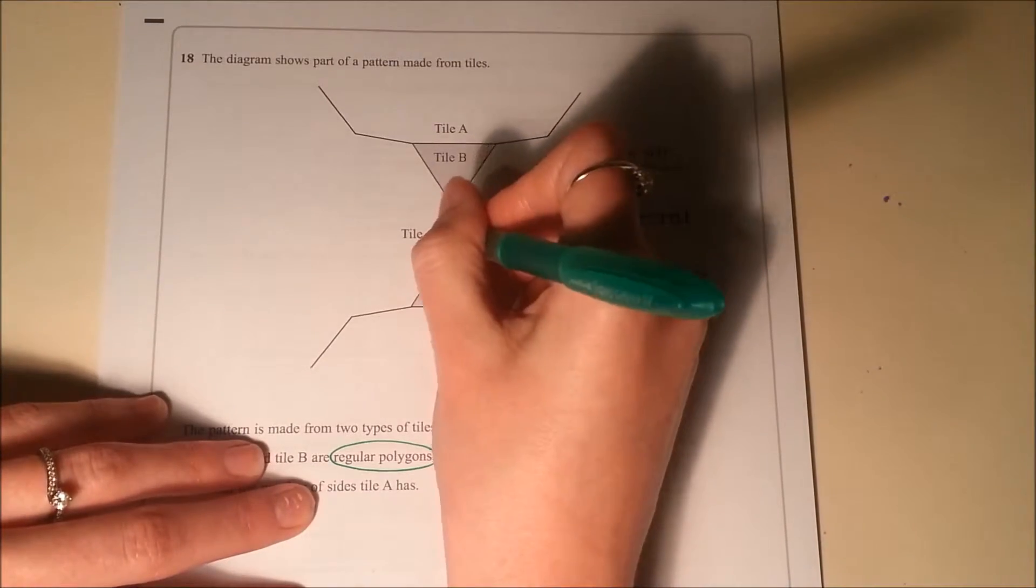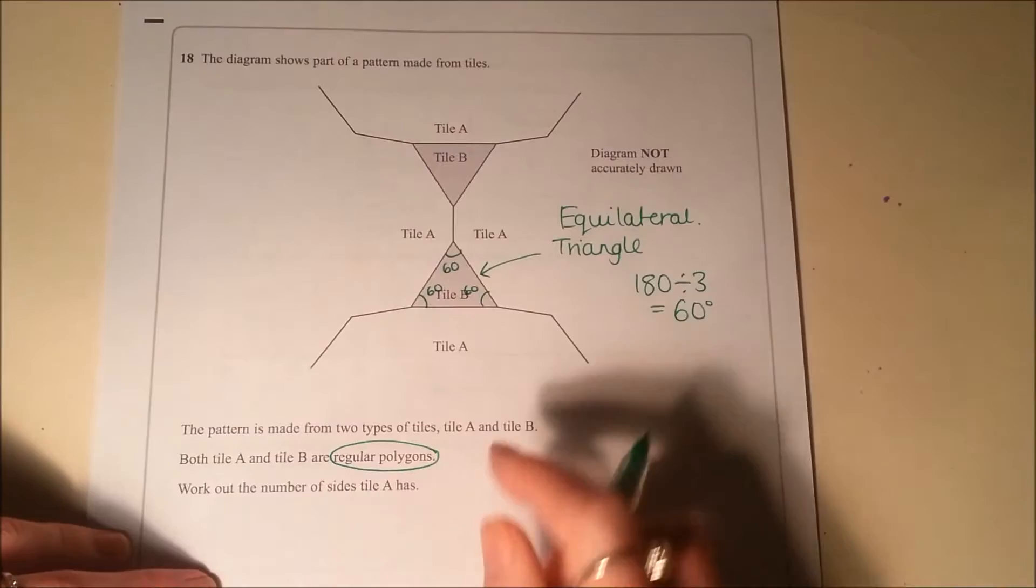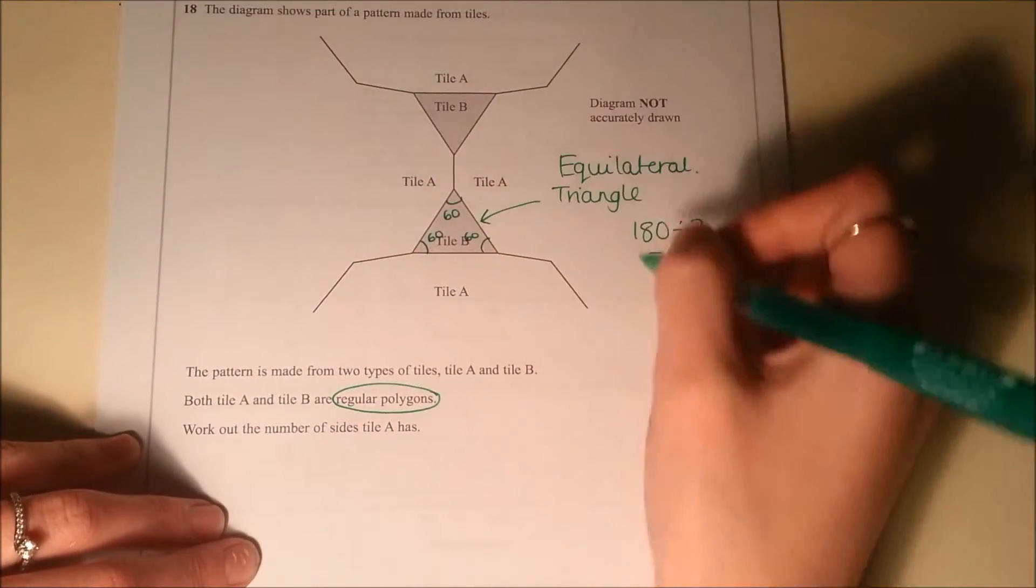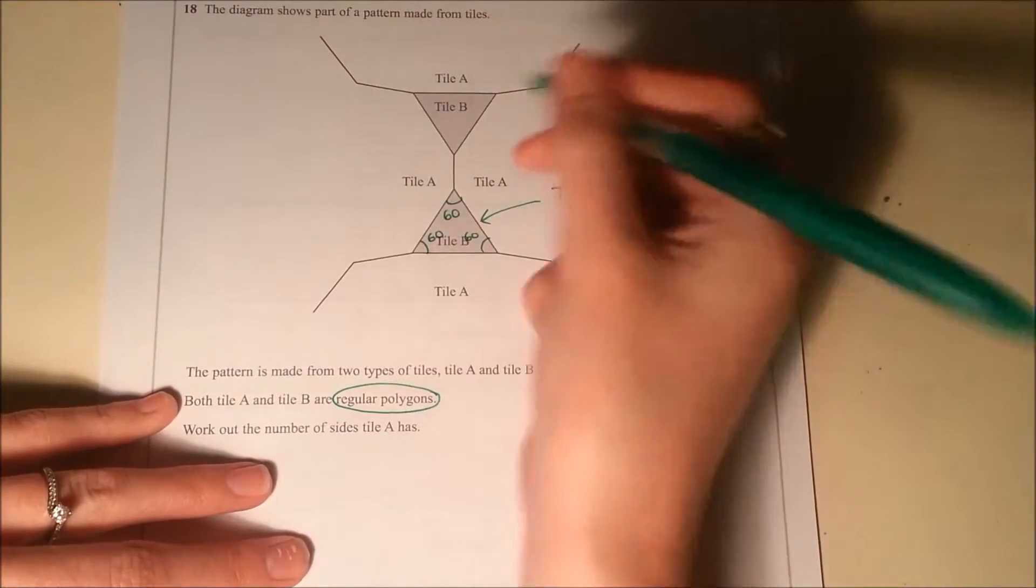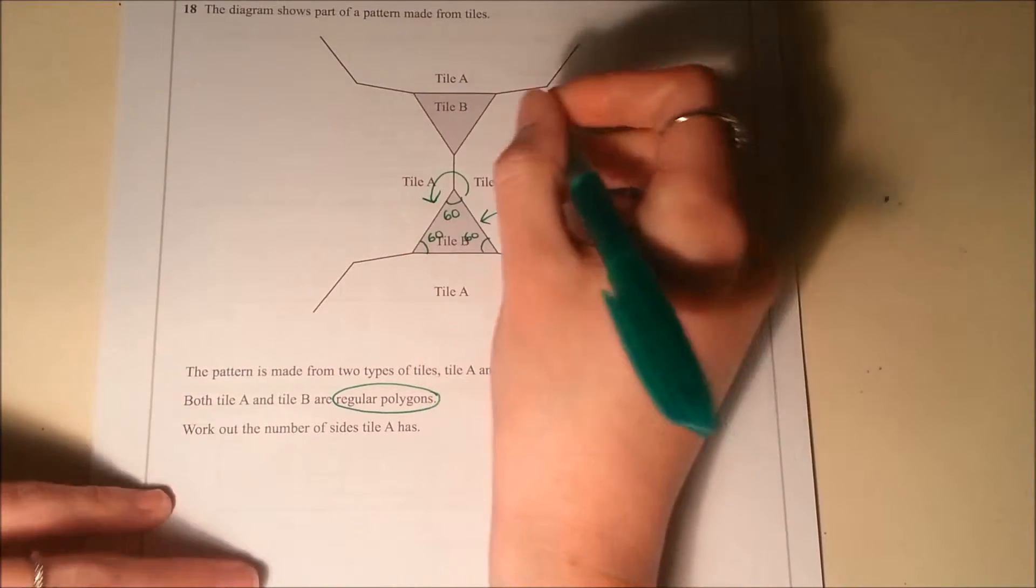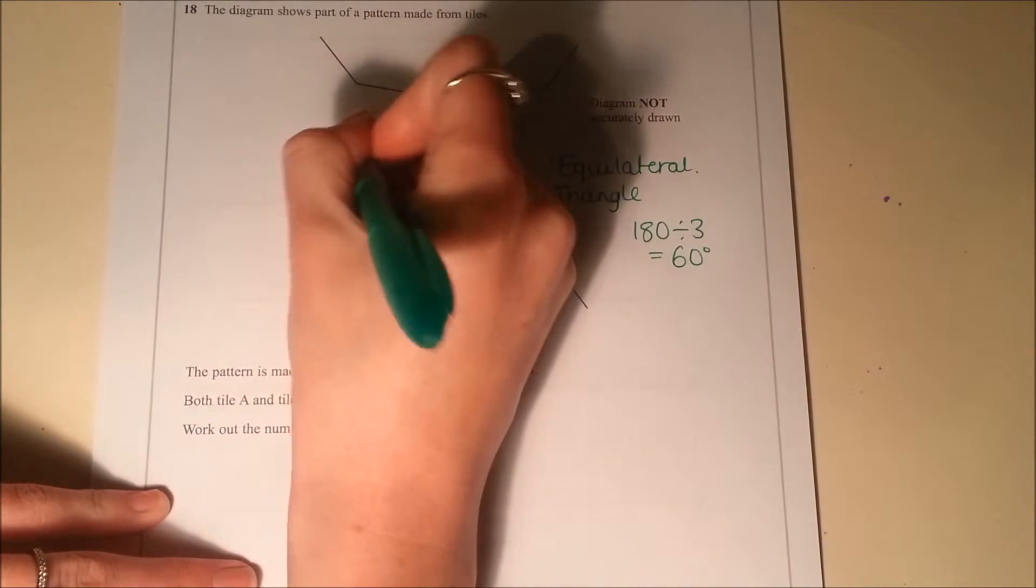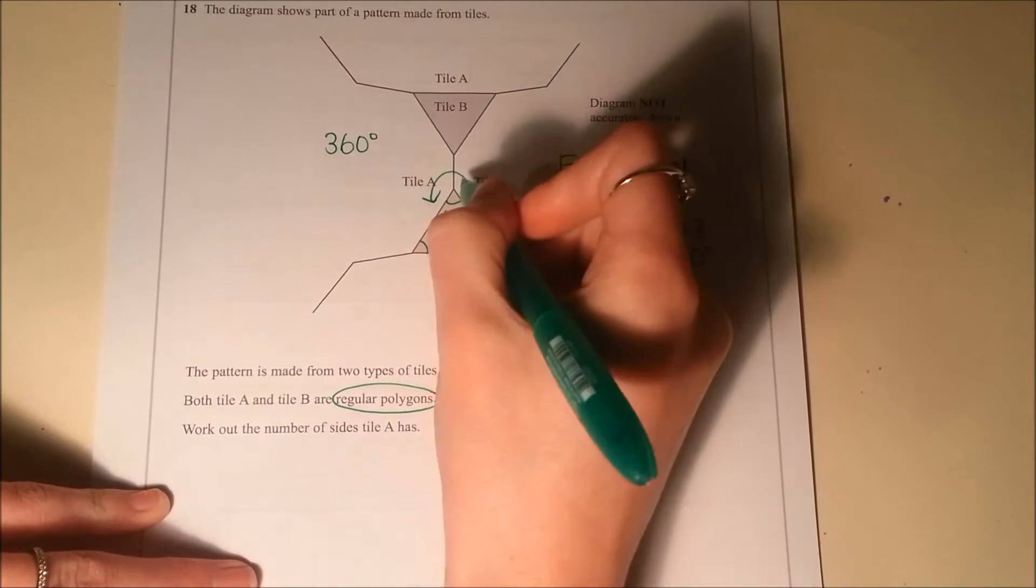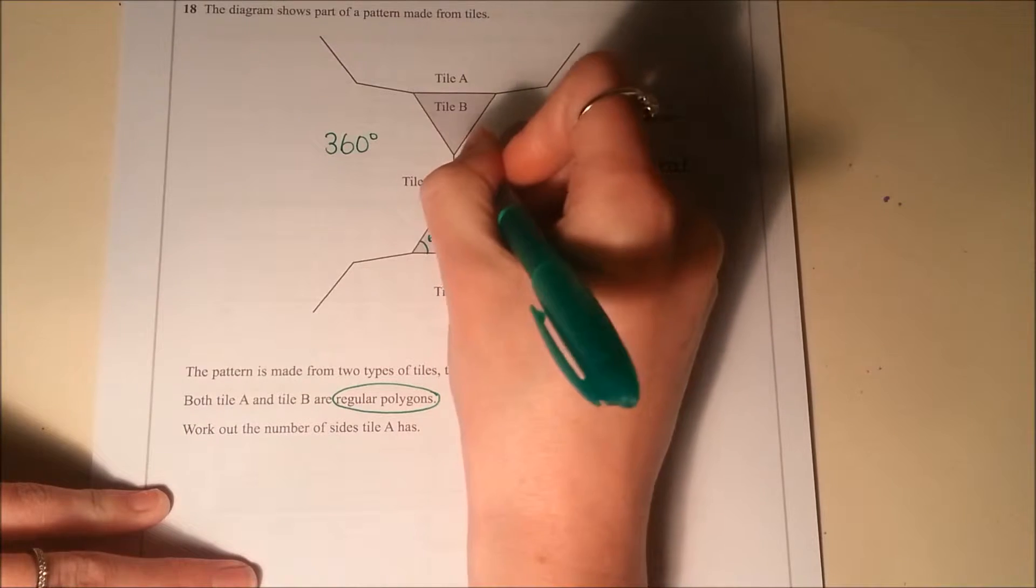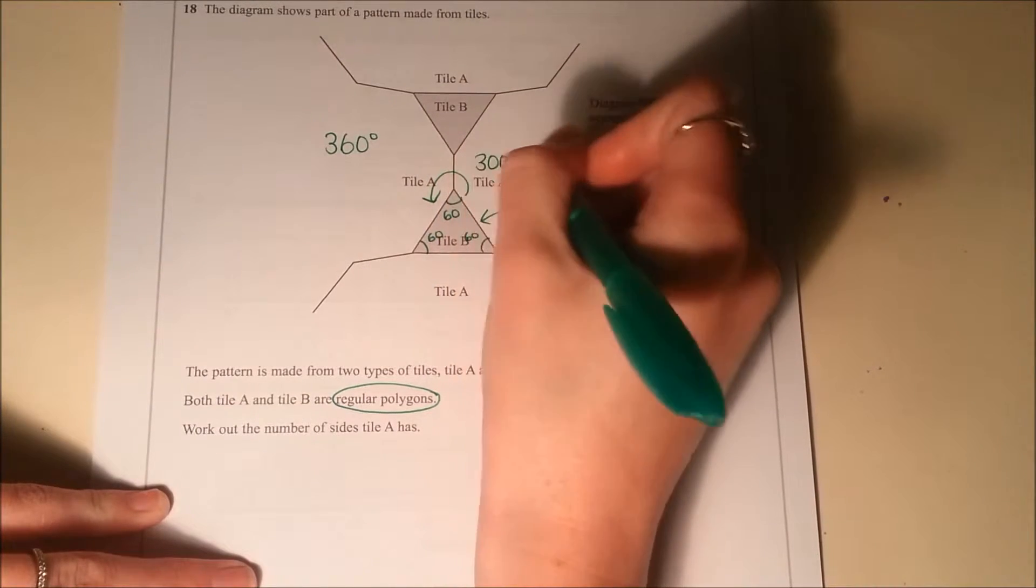And then I'm just going to look around this point here. So I haven't really read or worried too much about what the question is asking me to do yet. I'm just trying to work out what I can do with the maths that I've been given. So if we look around that point then, well I know that around a point I've got to add up to 360. So this angle round here is going to have to be 300 degrees.